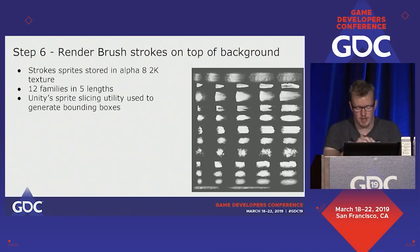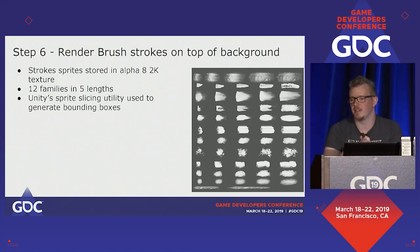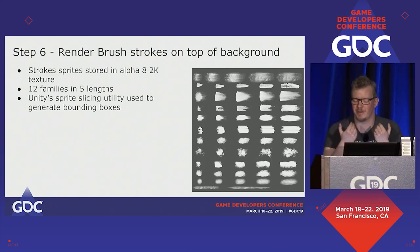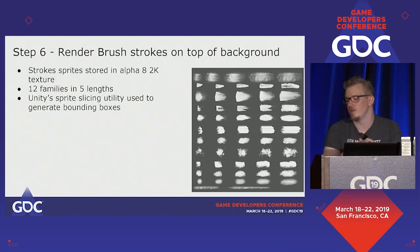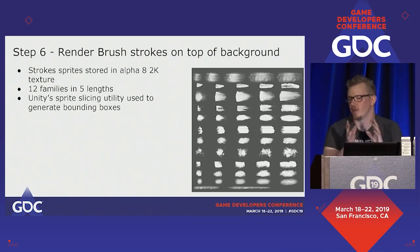Strokes are stored in an alpha 8, 2K texture. We found that distinctive strokes are actually far more important than diffuse and soft ones — I personally thought soft would work better and was completely wrong. Different sprites give the impression of different surfaces. For wood we ended up using quite long and hard strokes, while for the cat in the game we had strokes that were much more like coarser and bristly.